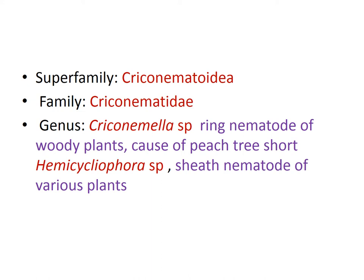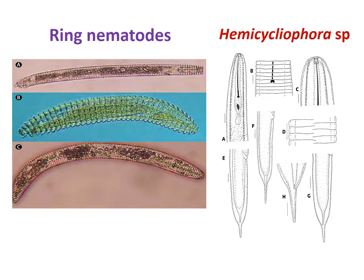The next superfamily is Criconematoidea, family Criconematidae. The genus Criconemella includes ring nematodes of various woody plants — they are ectoparasitic nematodes. Then Hemicycliophora is the sheath nematode of various plants. The first diagram shows the ring nematode Criconemella. The second diagram is Hemicycliophora, the sheath nematode — you can see the extra sheath outside the cuticle of the nematode.